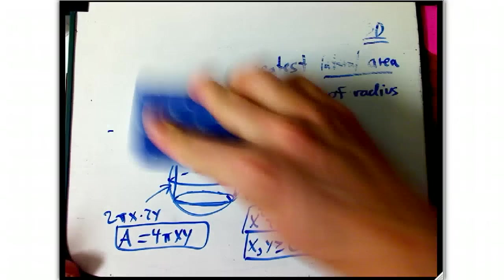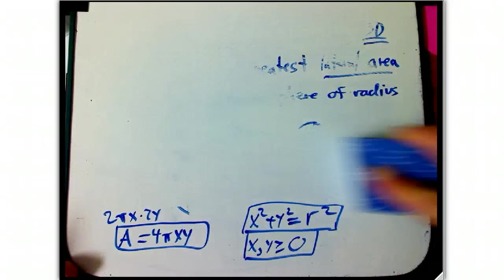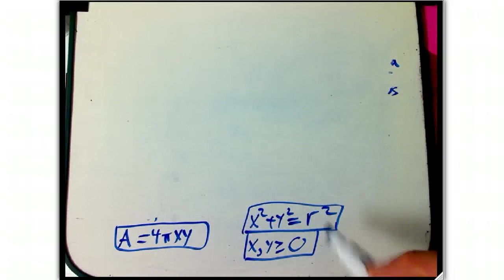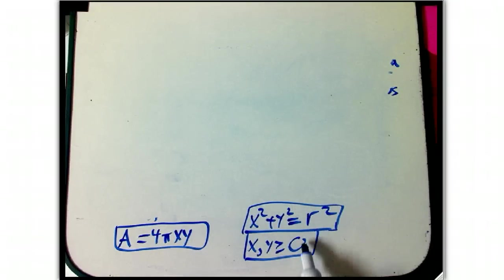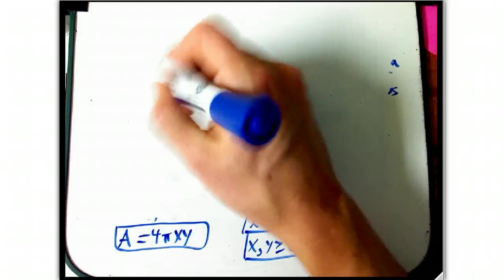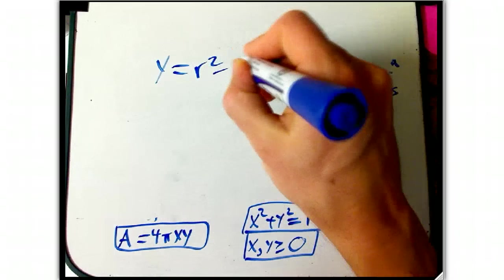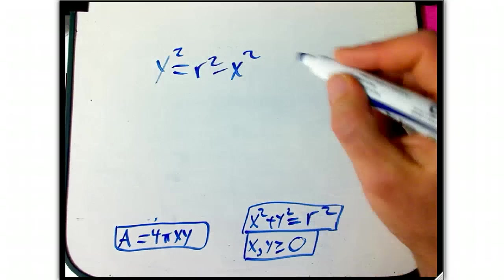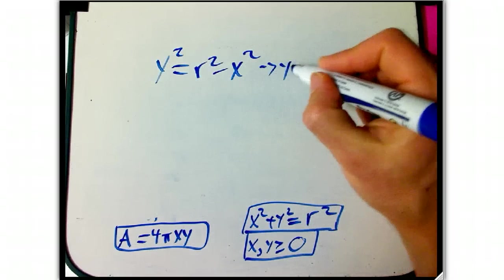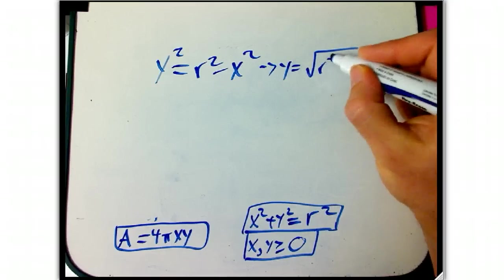All right, now erase it all except for that crucial data. Okay, let's solve the constraint. Looks very symmetrical here, X and Y come in symmetrically, and these inequalities come in symmetrically in here, so it doesn't really matter. Let's go ahead and solve Y is R squared, sorry, Y squared is R squared minus X squared.